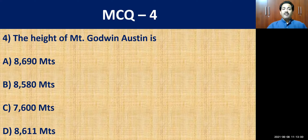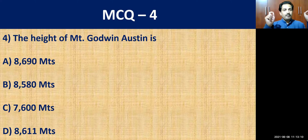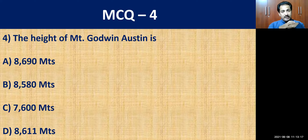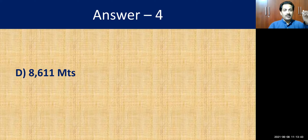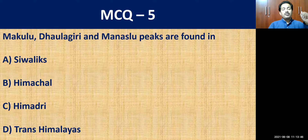MCQ number four: the height of Mount Godwin Austin. We have many peaks in Himadri, each with its own height. Mount Everest is 8,848 meters. But what is the height of Mount Godwin Austin or K2? Option D is the correct answer — 8,611 meters. This is the highest peak in India and the second highest peak in the world.